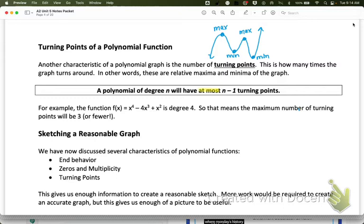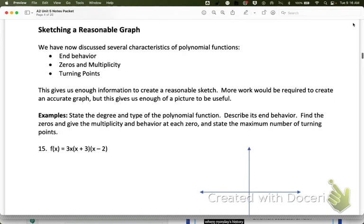That phrase, at most, is really important because that means it can have that many or fewer. It does not have to have 4. An x to the 5th graph can look like this, and it never turns around. But it can turn around up to 4 times, which would be like the one we just saw here. So if I have the function given there, f(x), that has a degree 4. If it is degree 4, the maximum number of turning points will be 3 or less than 3. So that's kind of the last little piece of the puzzle that we need.